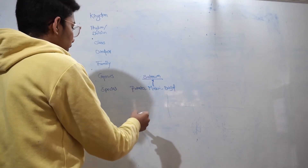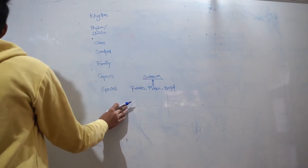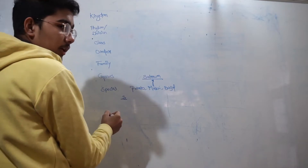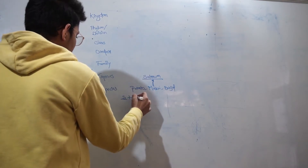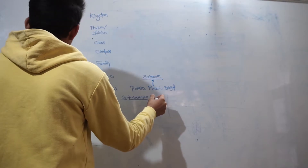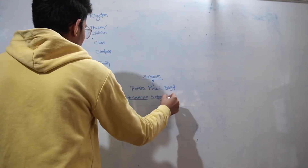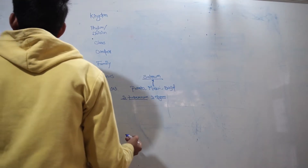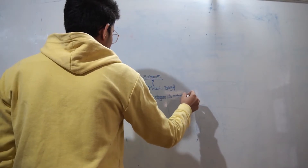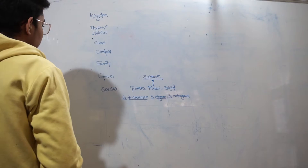Let us write the scientific names for these 3 species. The scientific name of potato is Solanum tuberosum. The scientific name of makoi is Solanum nigrum. And for brinjal, it is Solanum melongena. These are the scientific names of potato, makoi, and brinjal.